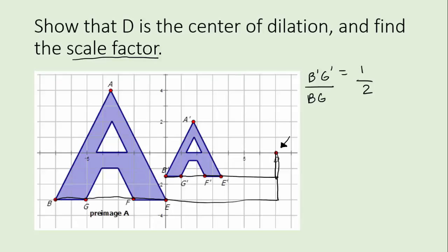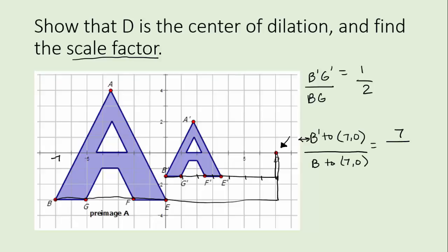We can verify that by looking at other measurements. Let's check horizontal distances from B prime and B to the center at seven, zero. From B prime over to that point we count seven units. From B, which is out at negative seven, the distance to zero is seven, plus seven more gives fourteen. Seven over fourteen reduces to one half — so that makes sense and supports the scale factor.